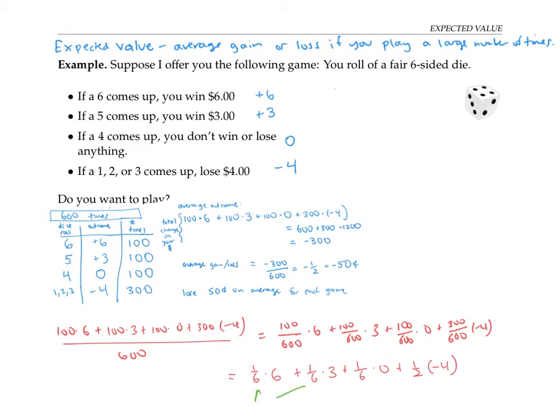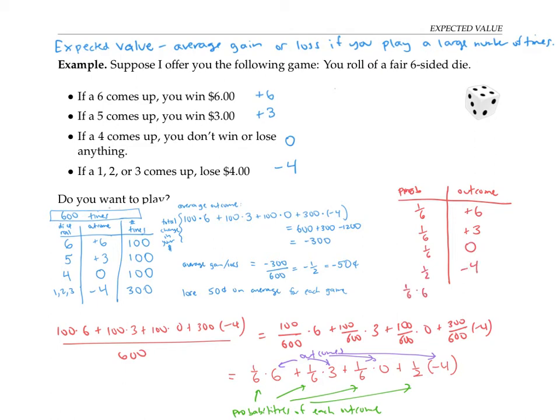These fractions can be thought of as the probabilities of each outcome, while these numbers six, three, zero, and negative four can be thought of as the outcomes themselves. So another way to organize an expected value calculation is to figure out the probability of each outcome and the outcome, multiply those together and add them up. So a sixth of the time I'm going to win $6, a sixth of the time I'll win $3, a sixth of the time I'll win $0, and half the time I'll lose $4. If I do one sixth times six plus one sixth times three plus one sixth times zero plus one half times negative four, I'll get the same answer of negative one half, or loss of 50 cents per game.